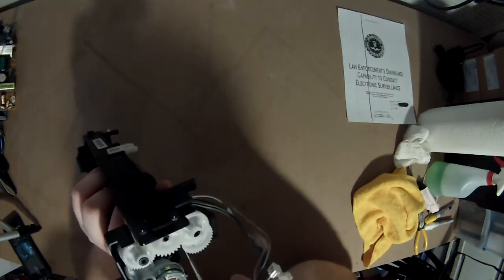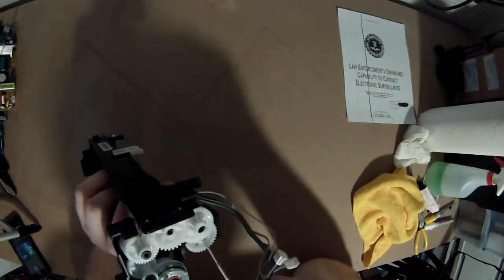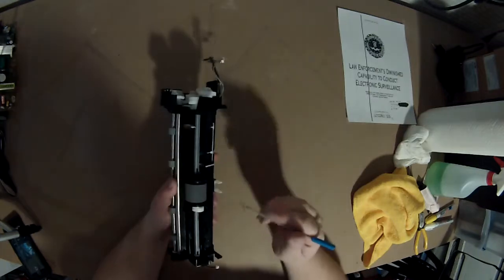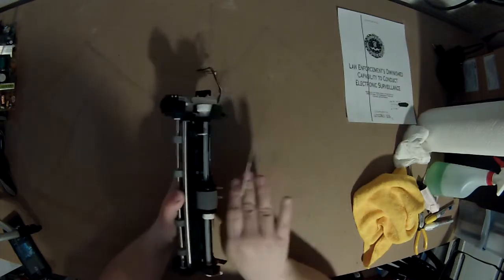Basically, it pulls down on this end here, and that releases this gear assembly, which lets this roller rotate, and that allows the unit to pick up paper from the tray that will be sitting here.